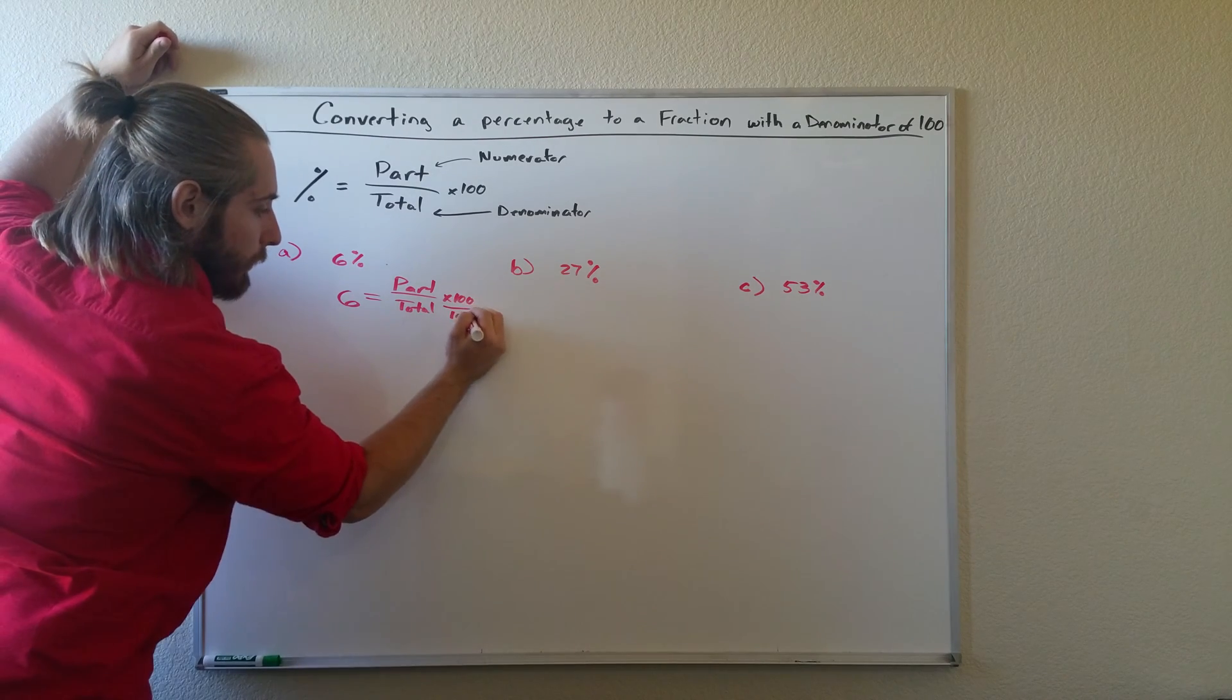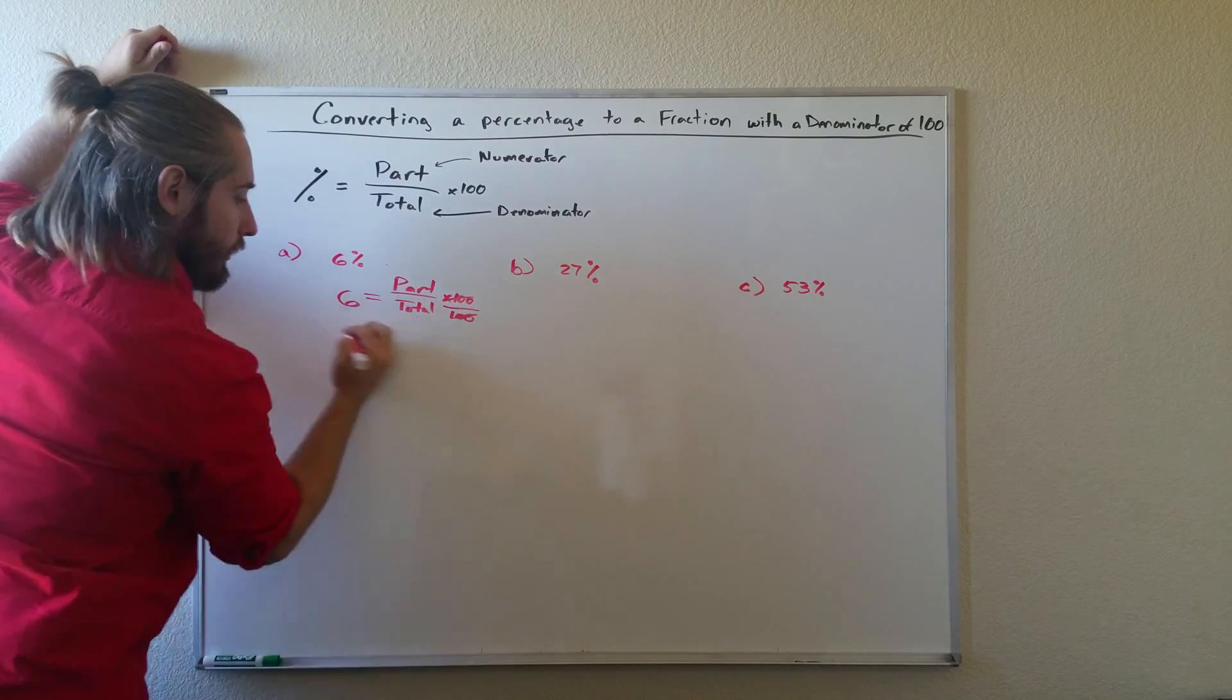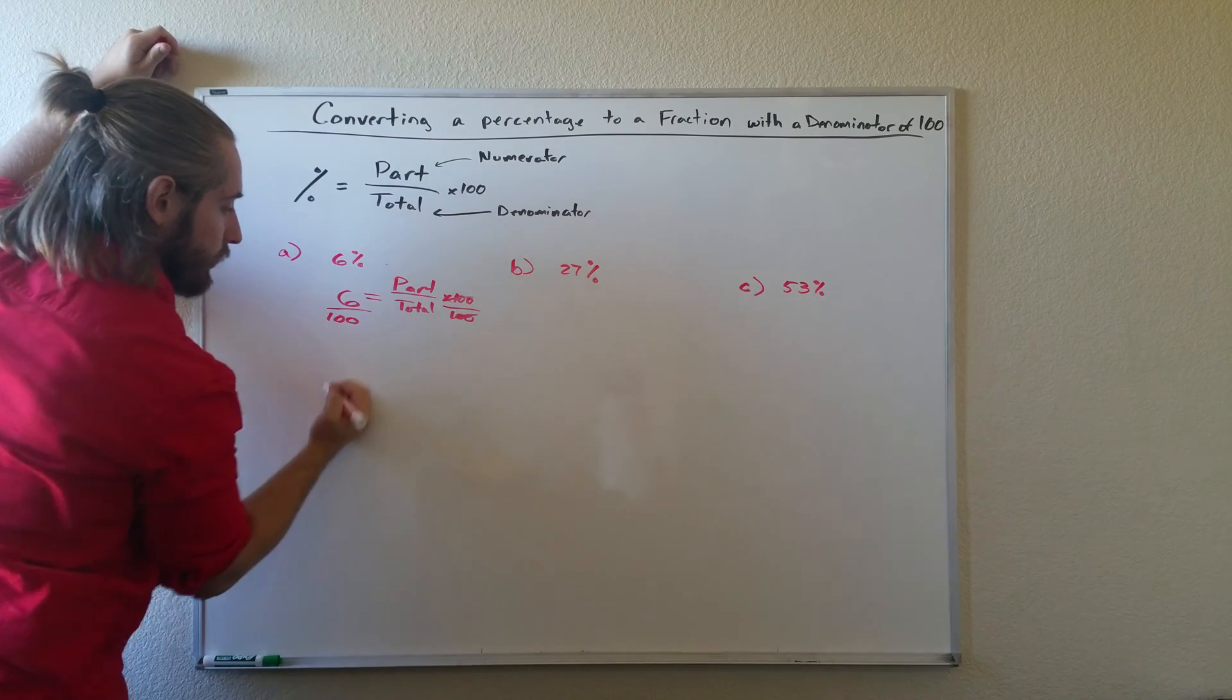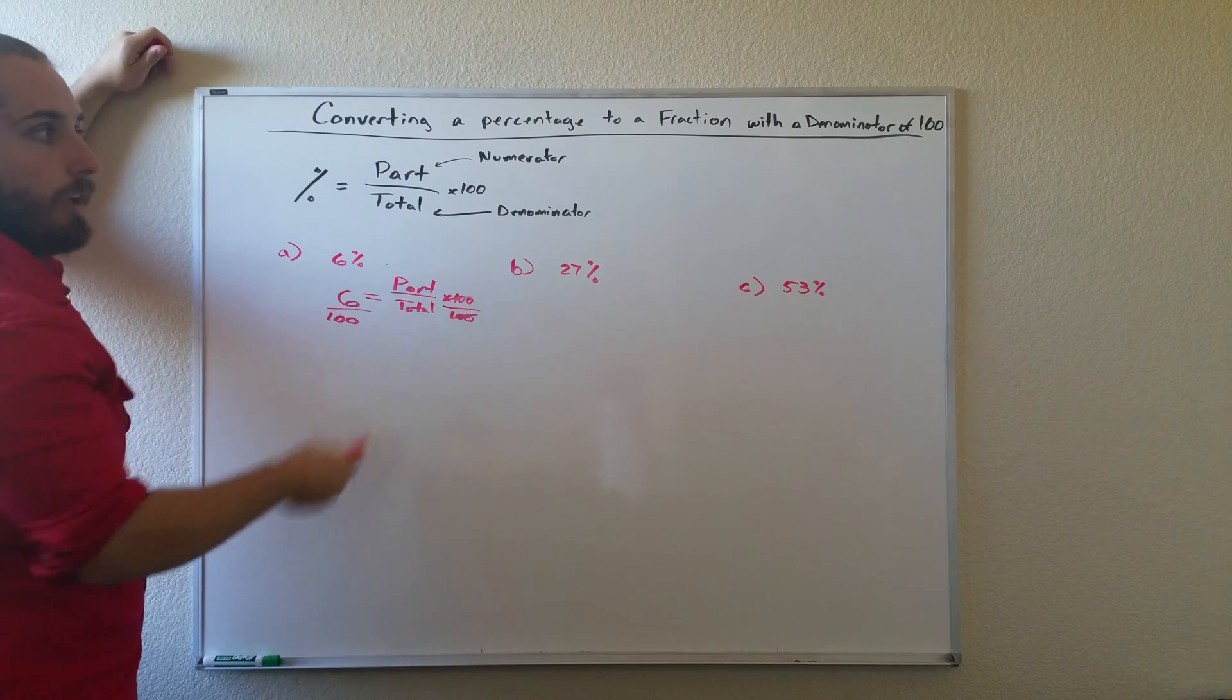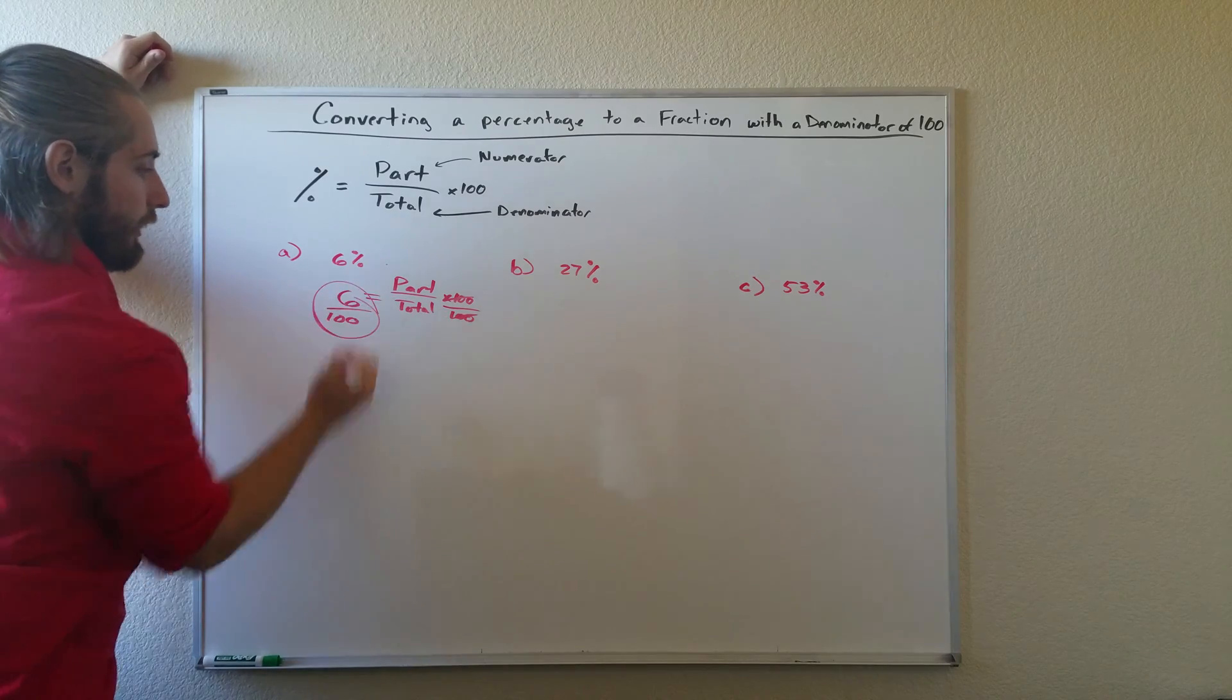So all we'll do is divide both sides by 100, so these will cancel out. We get 6 over 100, and since it wants our denominator to be 100, this is our final answer.